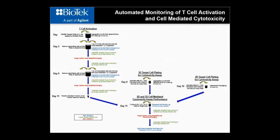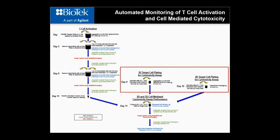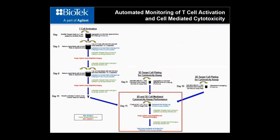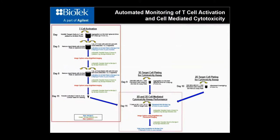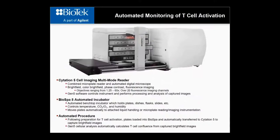The entire process consists of three portions carried out over an 18-day period. The first is the directed activation of the T-cell. In the second, the target cancer cells are plated in a 2D or 3D manner, and then in the third, the stained activated T-cells are added to the target cells and the T-cell-induced cytotoxicity of target cells is monitored over the next seven days. The next slides will focus on performing imaging and analysis of T-cell activation.